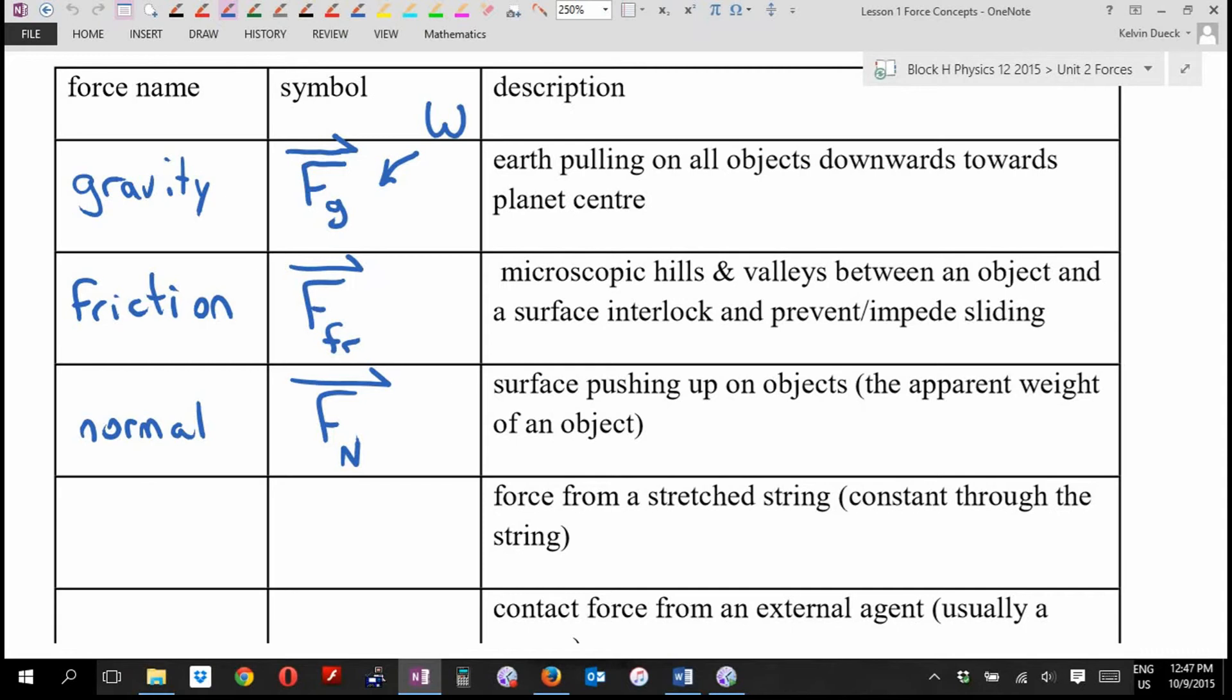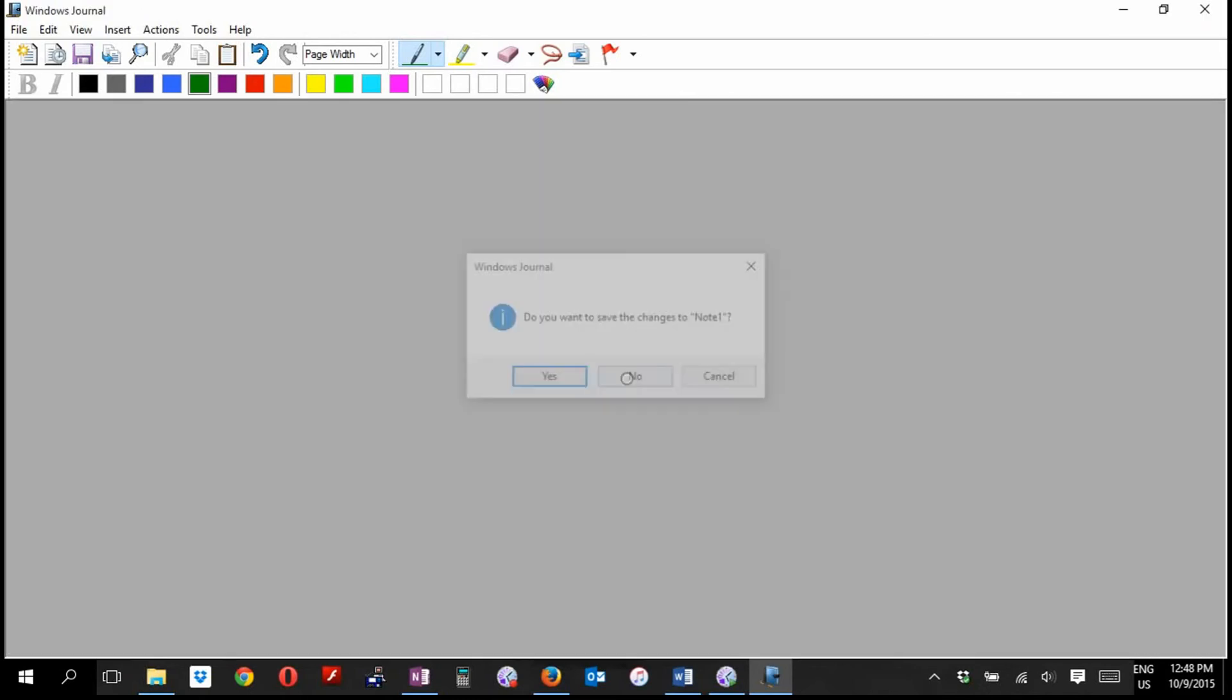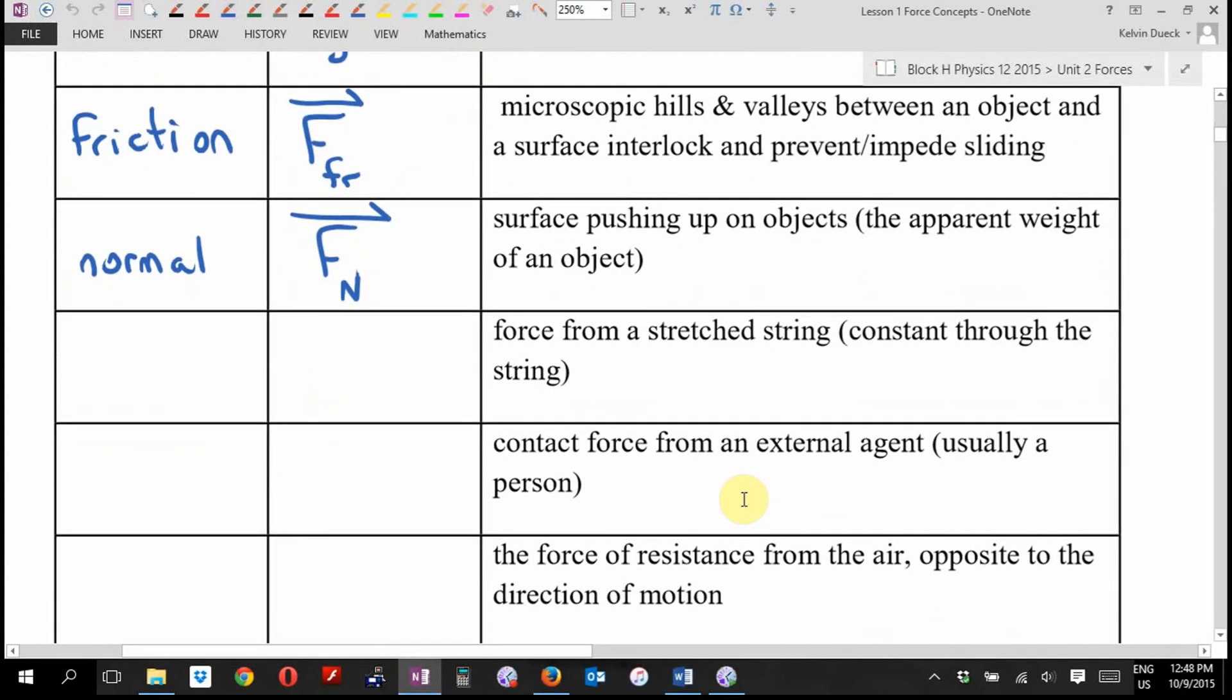About six years ago, I was marking physics 12. I was marking the provincial exam. And there was a question on the exam, on the written section, and it said, find FN, the normal force. And a kid wrote 'f***ing normal', which was funny, but he still got a zero. But okay, whatever. If you're going to go down in flames, if you can go down and make a one-liner, props to that.